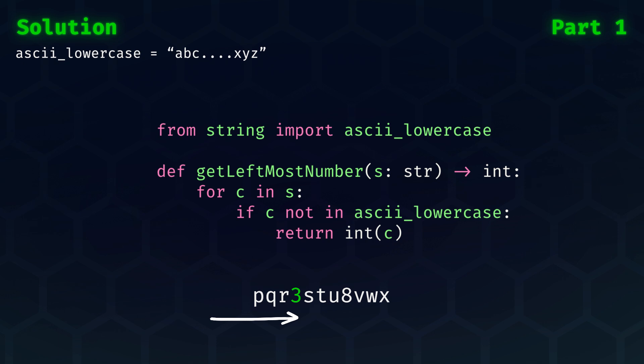First off, we can take a look at getting the leftmost number. It takes in a string and returns an integer. Here, we simply loop over the string from left to right, and the first character that we encounter, which is not in the alphabet, is the value we should return.